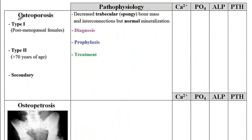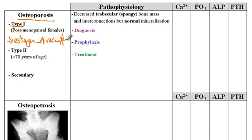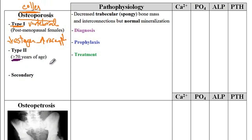The first condition is osteoporosis, which is divided into three types. Type 1 is seen in postmenopausal females. Since there is low estrogen, there would be more activation of osteoclasts and more resorption of bones. These patients are particularly prone to vertebral compression fractures as well as Colles' fractures. The second type is senile osteoporosis, seen in both men and women older than 70 years of age.